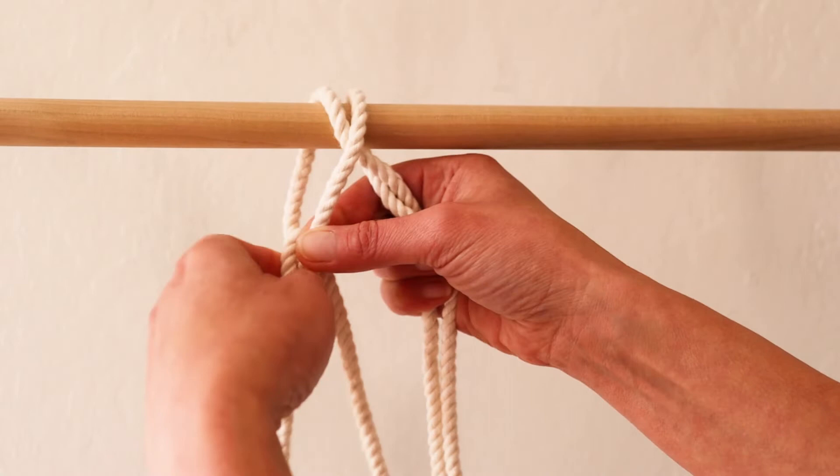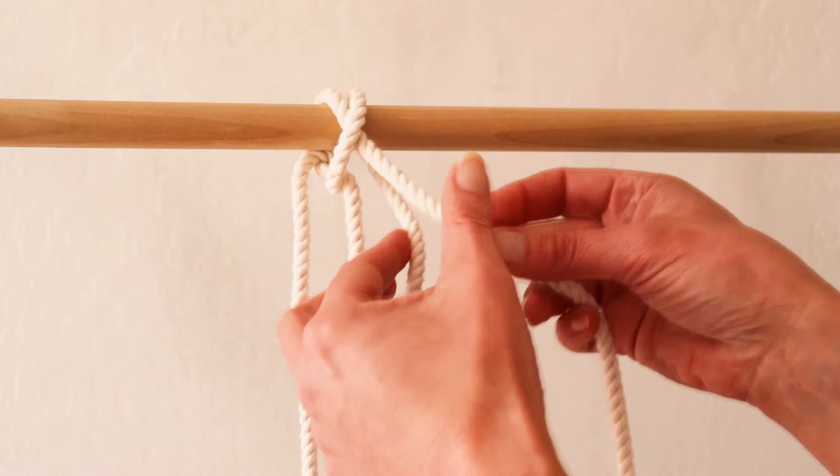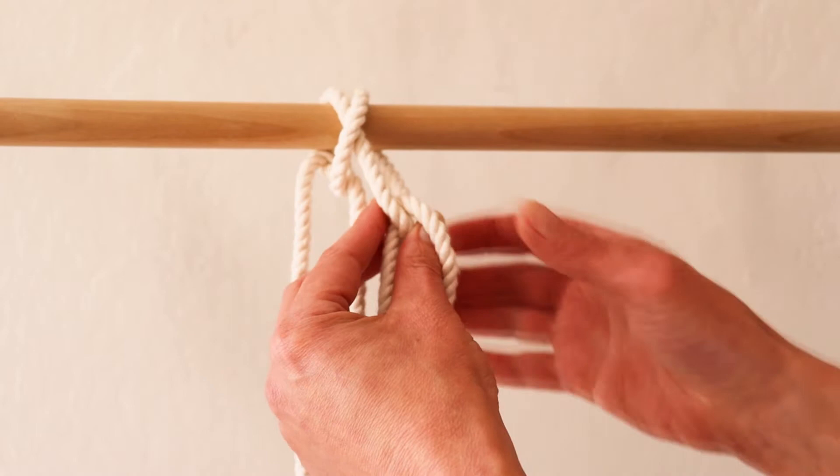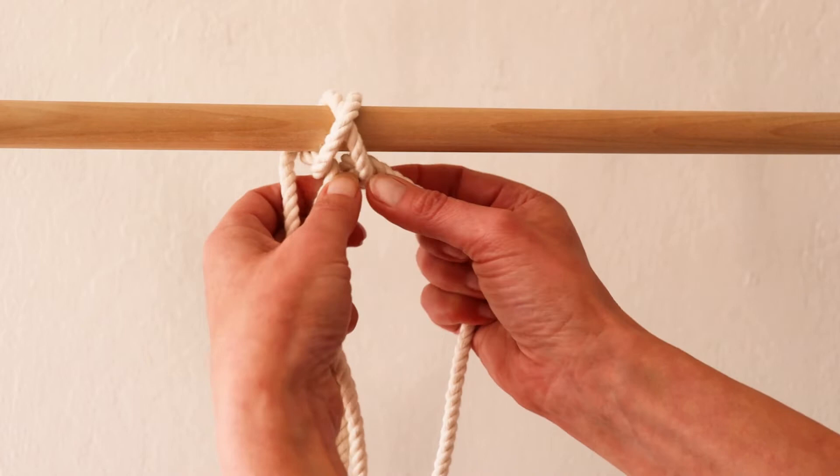Repeat the same process: front cord around and over the back cord through the loop. Now you can adjust and make it look nice.